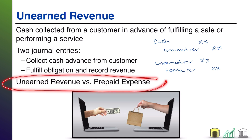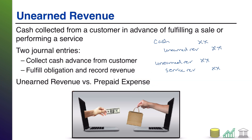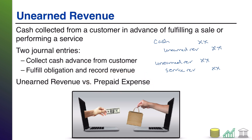Before we move to the example, you'll often hear unearned revenue and prepaid expenses discussed together. The reason is because they're two sides of the same coin. When one party pays in advance for something from another party, the first party that paid in advance gets to record a prepaid expense — an asset on their balance sheet representing an entitlement to receive a future good or service. The other party receiving the cash advance records unearned revenue — a liability.